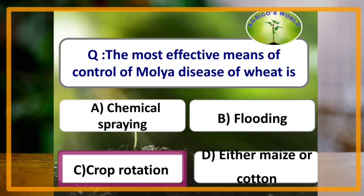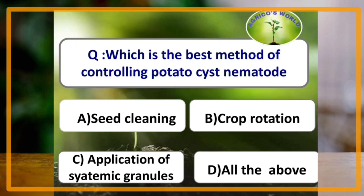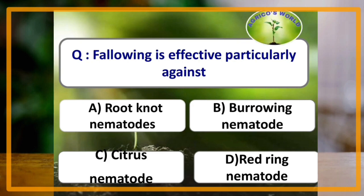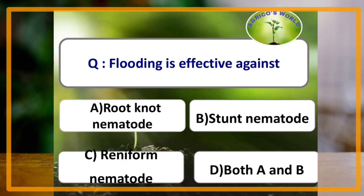Crop rotation is the most effective means to control molia disease of wheat. Crop rotation is also the best method for controlling potato cyst nematode. Fallowing is effective particularly against root knot nematode.